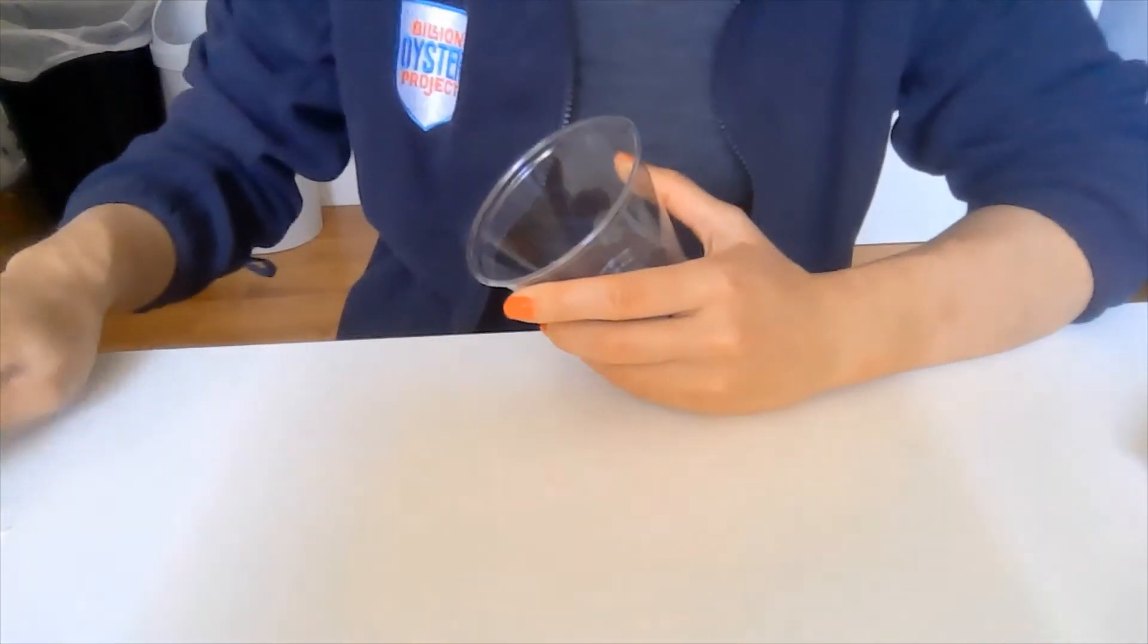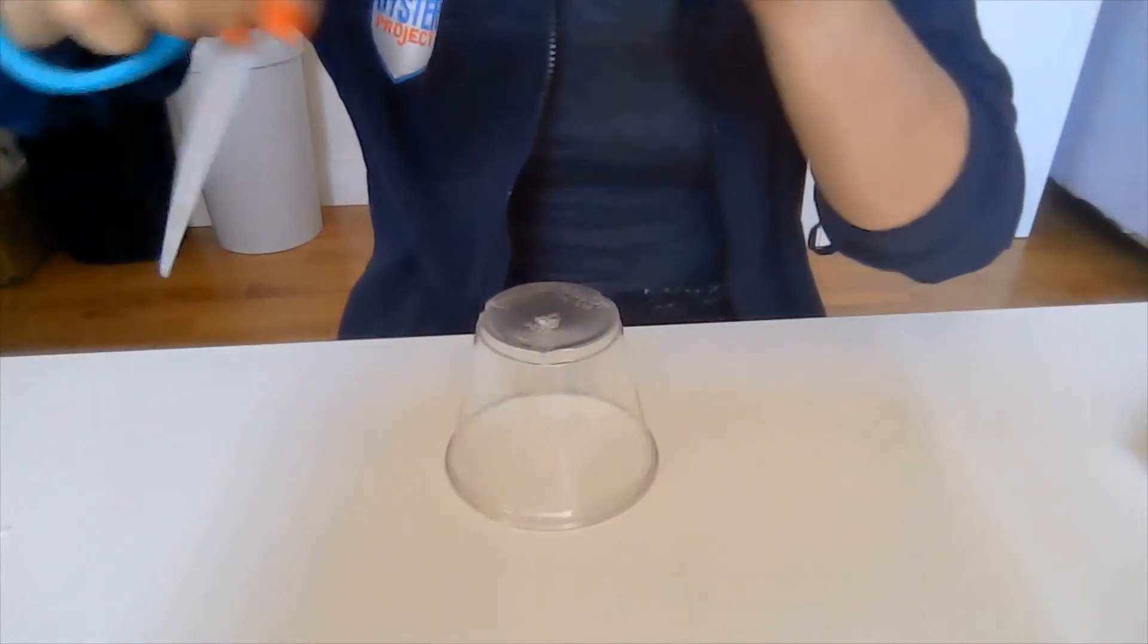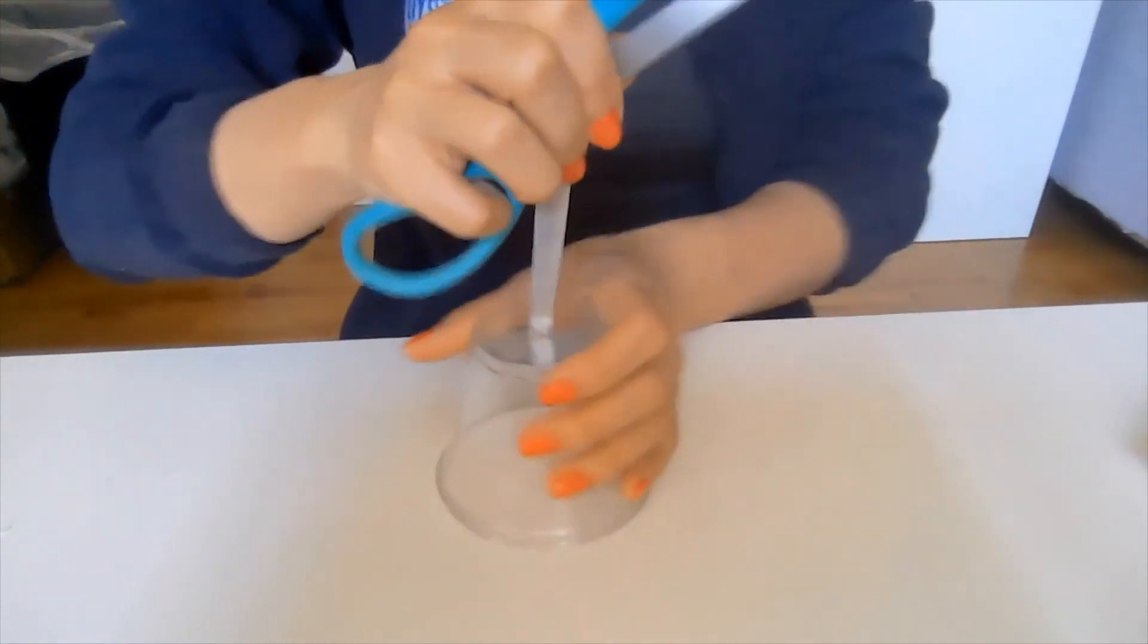Lastly, you're going to make a stand for your anemometer. Take your cup and pierce a hole in the bottom. When you turn it upside down, it becomes a stand for your new anemometer.